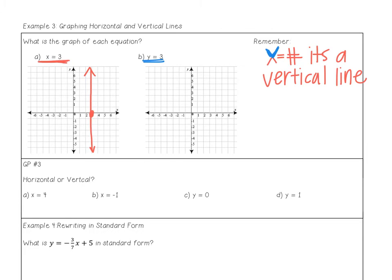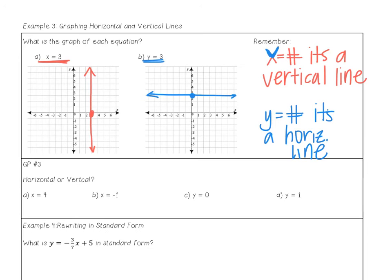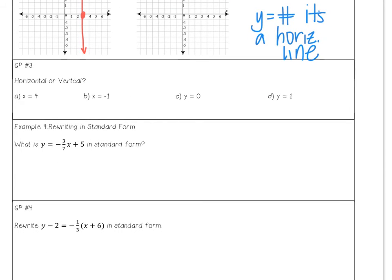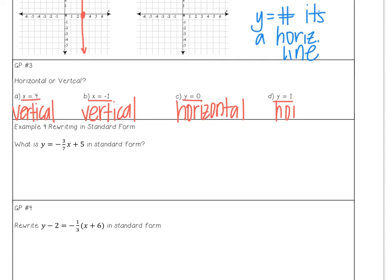That leads you to believe that if y equals a number — say y equals positive 3 — then everywhere on the line y is also positive 3. So if y equals a number, that is a horizontal line. In guided practice number 3: for a, x equals a number, so it's a vertical line. For b, x equals a number, also vertical. For c, y equals a number, so it's horizontal. For d, y equals a number, so it's horizontal.